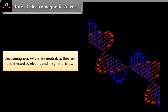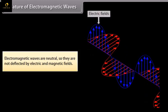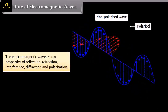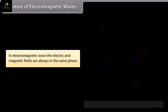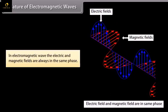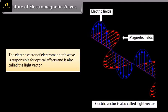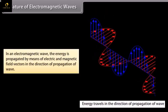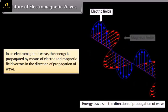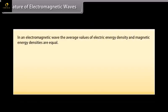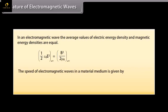Nature of electromagnetic waves. Electromagnetic waves are neutral so they are not deflected by electric and magnetic fields. The electromagnetic waves show properties of reflection, interference, diffraction, and polarization. In electromagnetic waves, the electric and magnetic fields are always in the same phase. The electric vector of electromagnetic waves is responsible for optical effect and is also called the light vector. In an electromagnetic wave, the energy is propagated by means of electric and magnetic field vectors in the direction of propagation of waves. The average values of electric energy density and magnetic energy densities are equal. The speed of electromagnetic waves in a material medium is given by the relation nu is equal to c upon n.